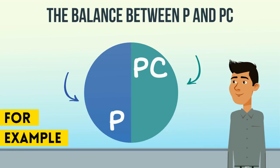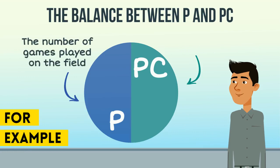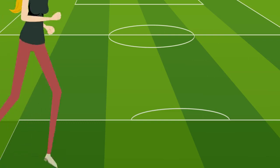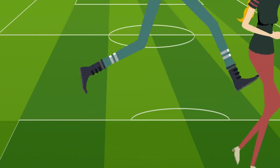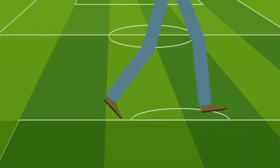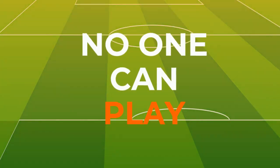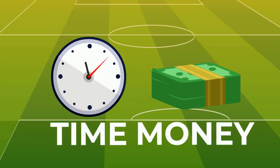For example, let's say P is the number of games played on the field, and PC is maintaining the field. If too many games are played without maintenance, the field falls into disrepair and no one can play. To get the field up and running again, more time and more money will need to be spent.